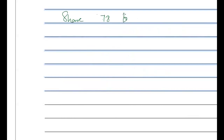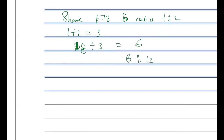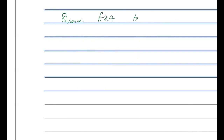Share 18 pounds in ratio one to two. You do one plus two, which gives you three. Then 18 divided by three gives you six. So six times one is six, and six times two is twelve.